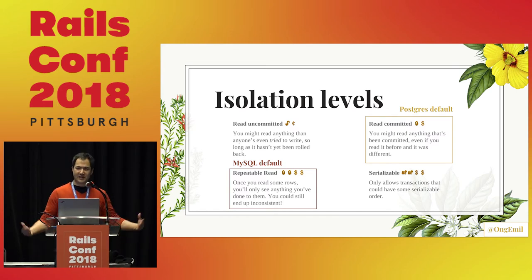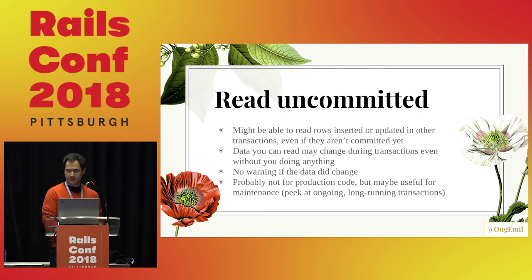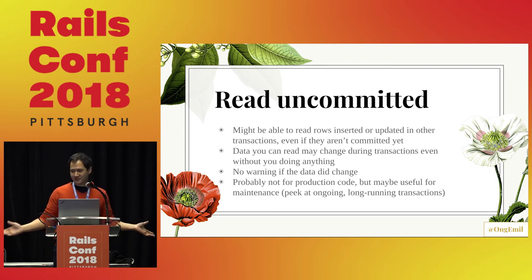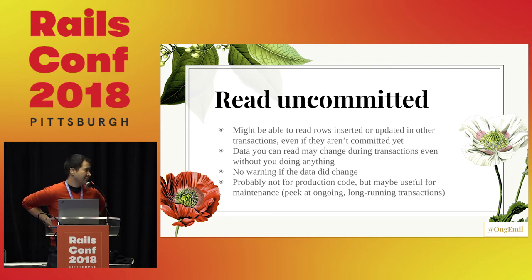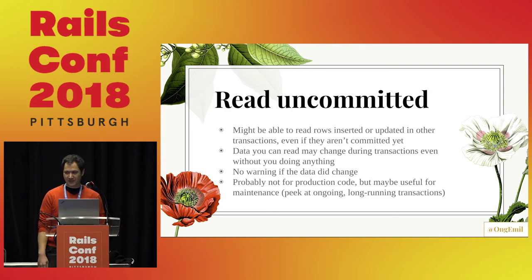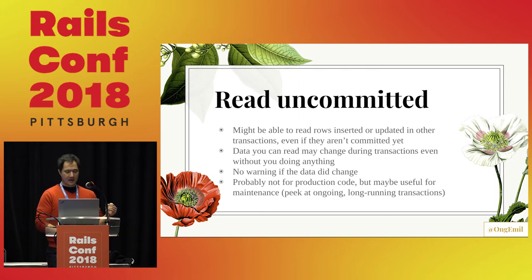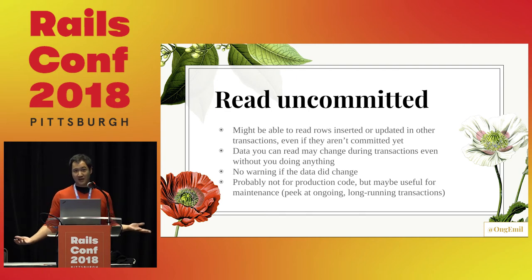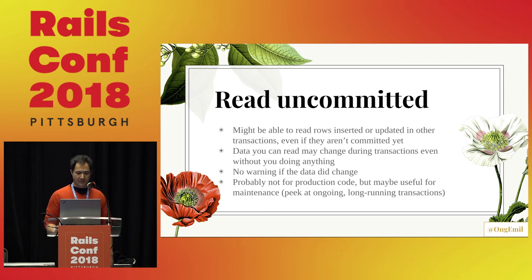Read Uncommitted — the TL;DR is there's no guarantee about isolation. There's nothing required of the database to isolate your transaction. You can in fact read rows that have been updated or inserted in other transactions that haven't even committed yet. That means if you read data during your transaction and read it again, it could be totally different with no warning, and it might even roll back. You have no guarantees whatsoever. I can't think of a great reason to use this for production code, but I have used it for sneaking a peek at what's going on in SQL in production during a really long-running transaction.